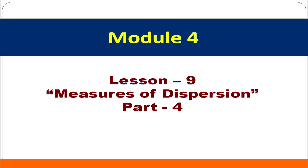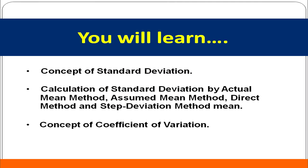Welcome learners, I am Divyanath. Today we are going to discuss about Module 4, Lesson 9, Mazes of Dispersion, Part 4. In this module we are going to discuss about the concept of standard deviation, calculation of standard deviation by actual mean method, assumed mean method, direct method, and step deviation method. Then we are going to discuss about the concept of coefficient of variation.